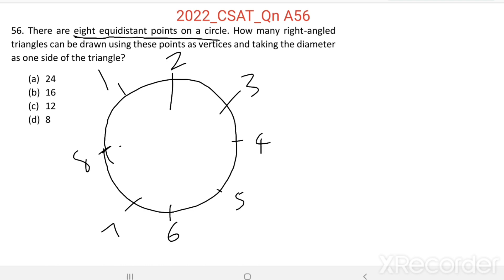Then how many right-angled triangles can be drawn using these points as vertices? And we have to take one of the sides of the triangle as the diameter of the circle.